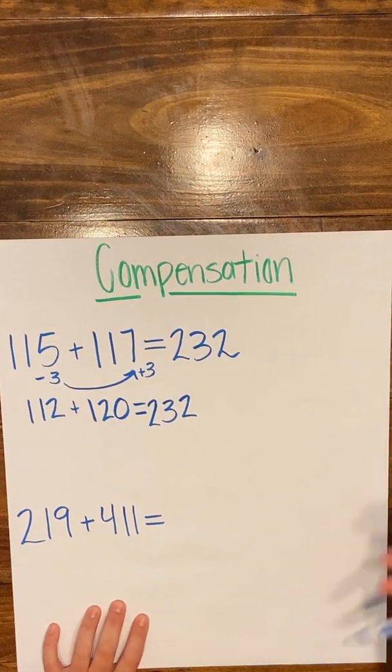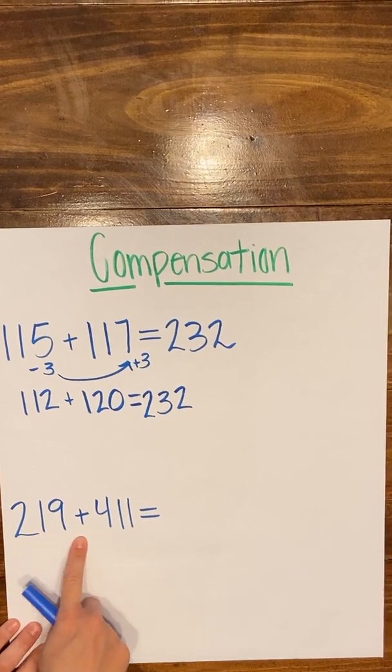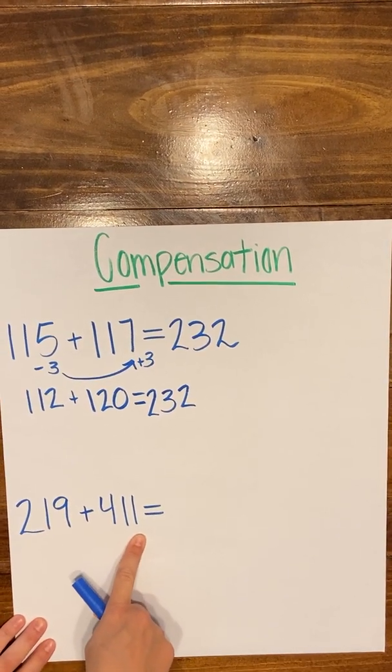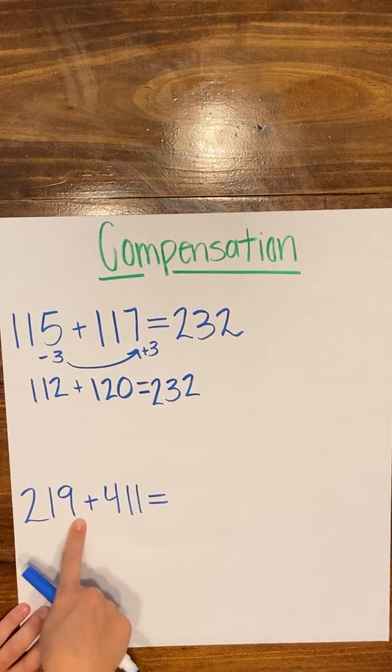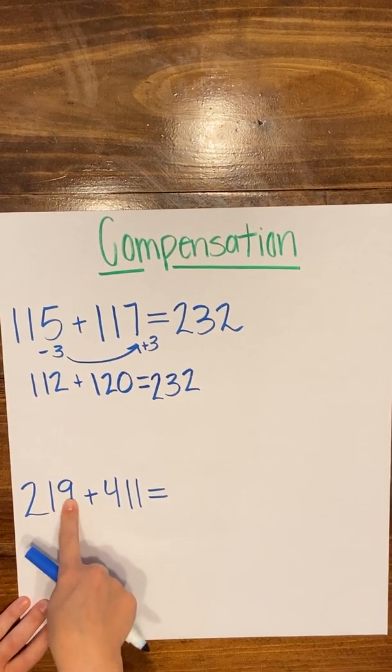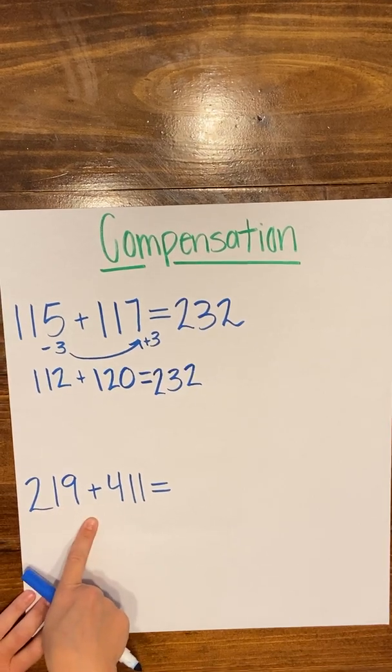So let's look at one more example. We're going to move down to 219 plus 411. And again, I'm kind of thinking this number right here would be easier to work with if there was a zero in the ones place and we had a nice even 220 to work with.